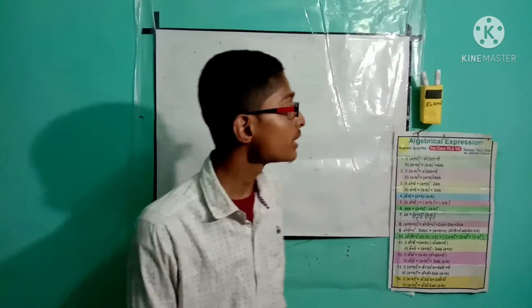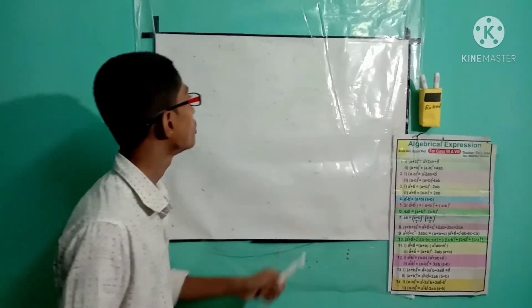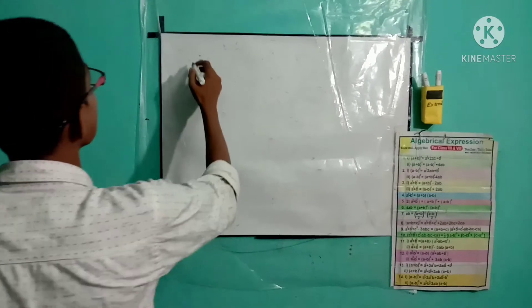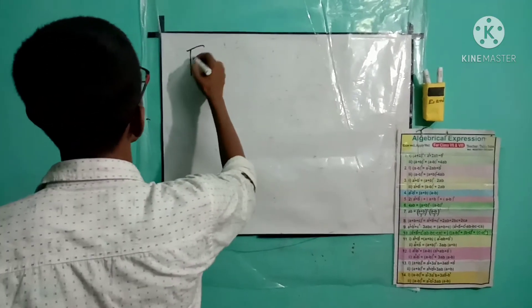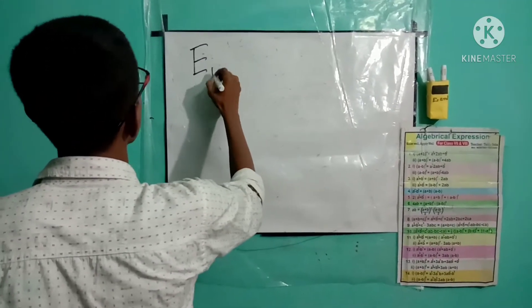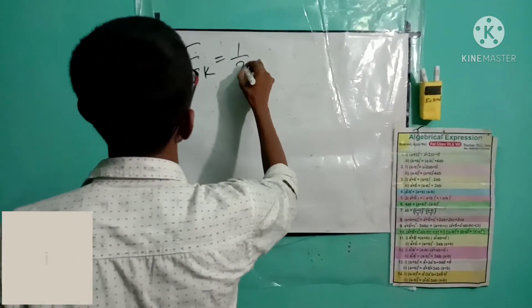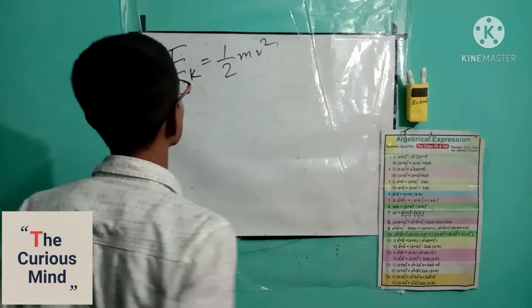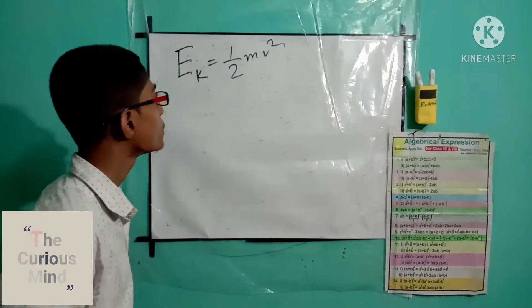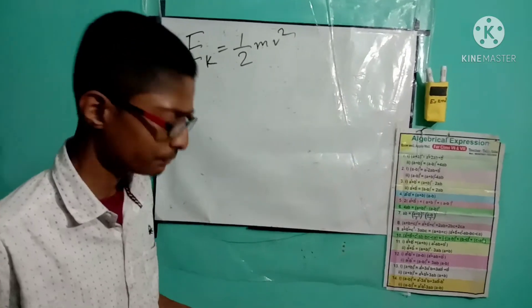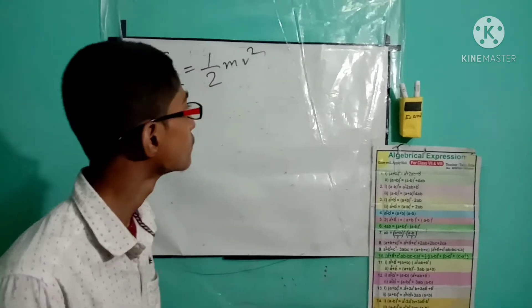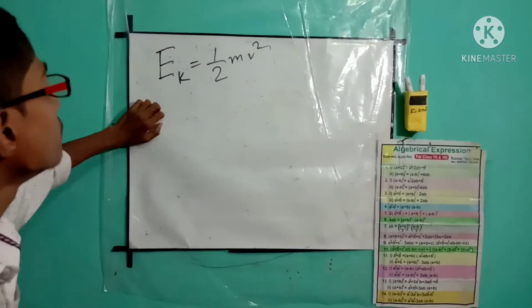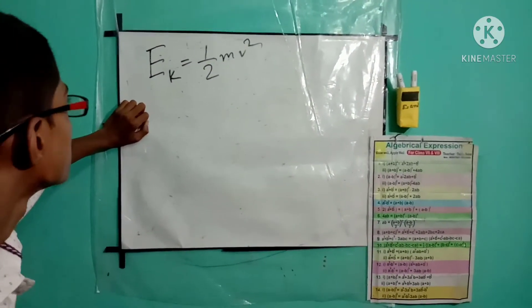Hi guys, in this video we will try to derive the equation that is the kinetic energy of a particle will be half mv squared. We know this equation very well. It is a very simple equation, but in this video we will try to derive it.